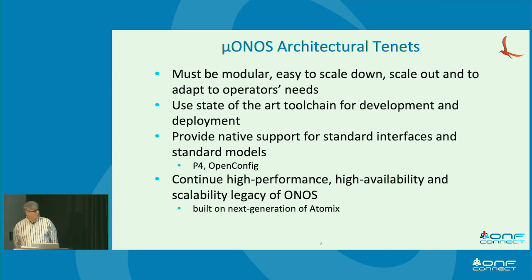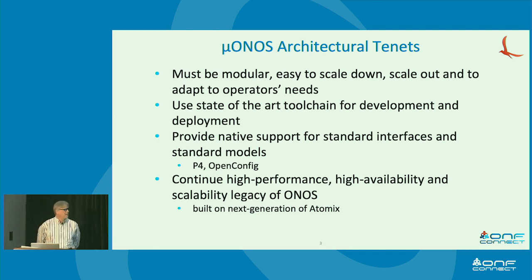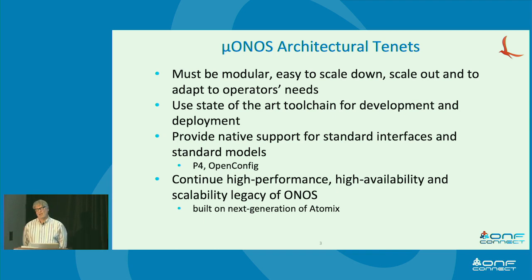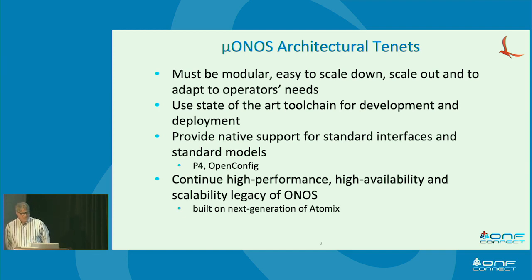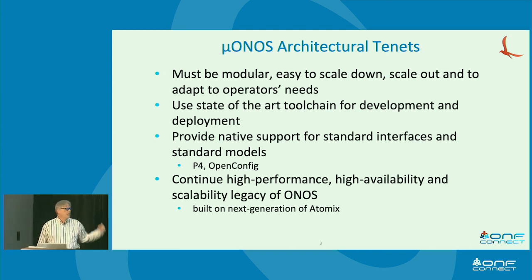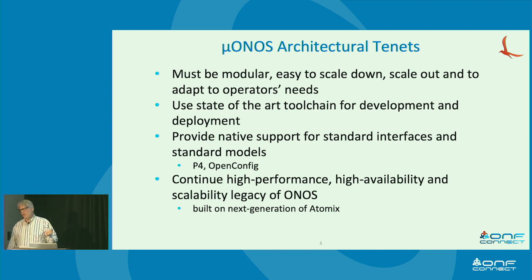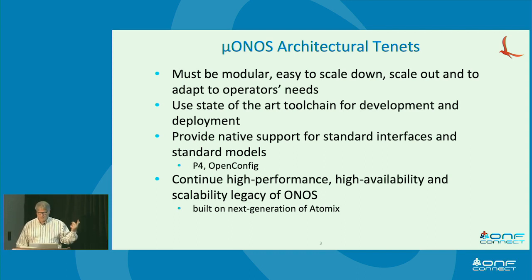We are moving ahead with a state-of-the-art toolchain for development and deployment. We want to provide native support for things like P4 and OpenConfig, using OpenConfig models to check inbound requests and make sure they match what the device can support. We also want to continue with the high-performance, high availability, and scalability from legacy ONOS. We'll continue to use Atomix, which is what current ONOS uses — an implementation of Raft used for things like shared data structures and HA.